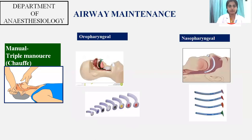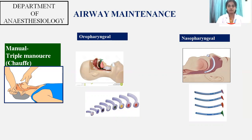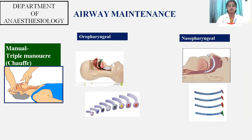To manually maintain your airway, there is the triple maneuver or modified triple maneuver, in which you perform a head tilt, chin lift, and jaw thrust. This process will keep your airway intact and allow normal breathing. We also have devices for the same purpose: oropharyngeal devices and nasopharyngeal devices.